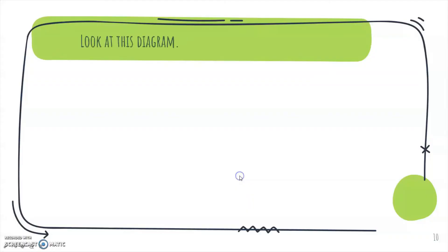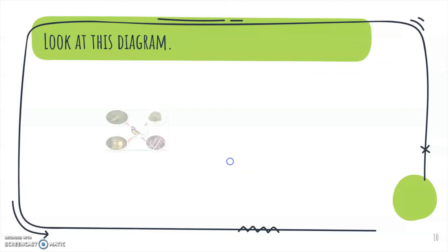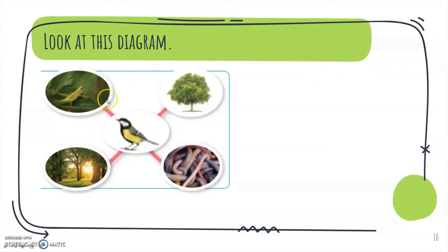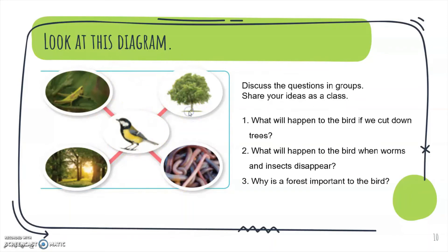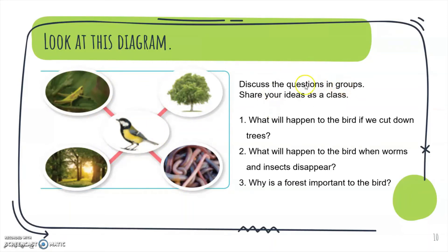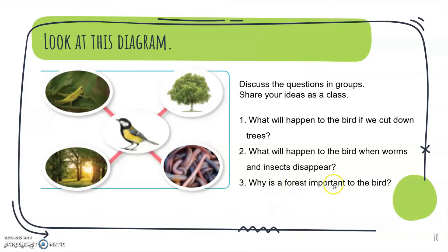Now look at this diagram and discuss the questions in your group, then share your ideas as a class. Number one: what will happen to the bird if we cut down the trees? Number two: what will happen to the bird when worms and insects disappear? And number three: why is a forest important to the bird?